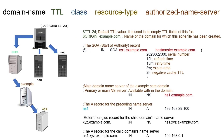With this setup, the start of authority record automatically receives the domain name from the origin directive, and NS records receive it from the start of authority record. In our example, we configured the domain name example.com in the origin directive. From this directive, DNS will automatically configure the domain name field of the start of authority record and NS records.